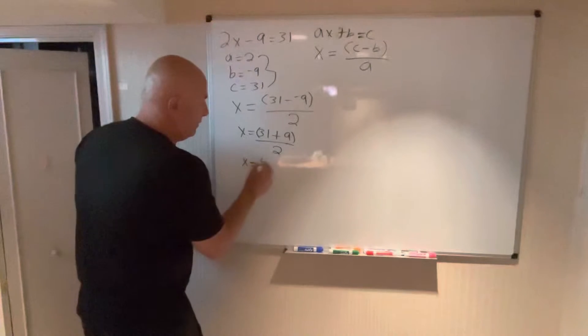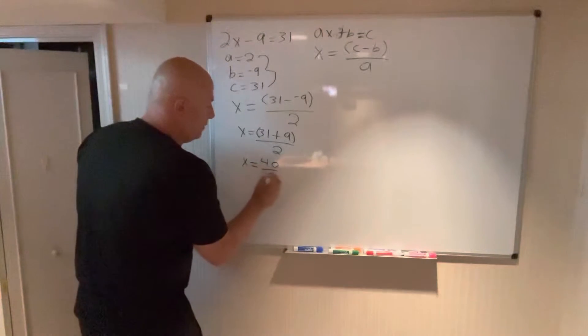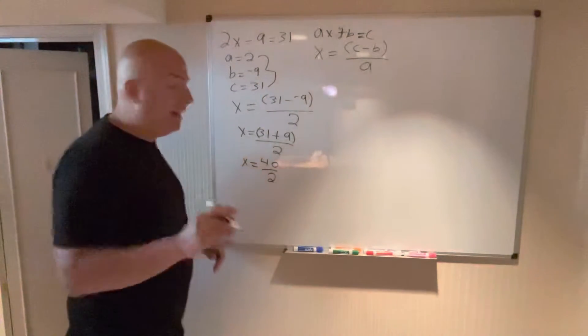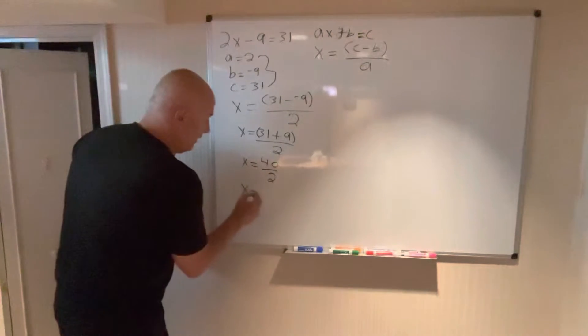x equals 40 over 2, and finally, x equals 20.